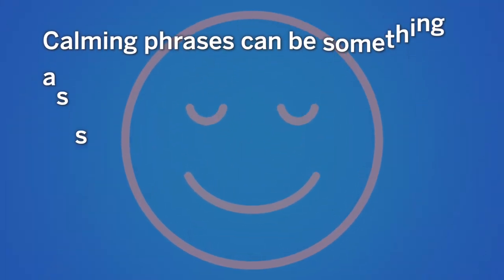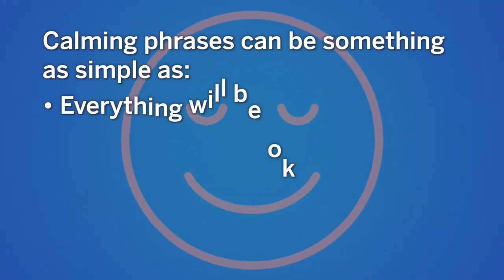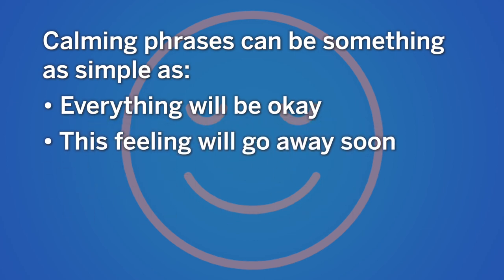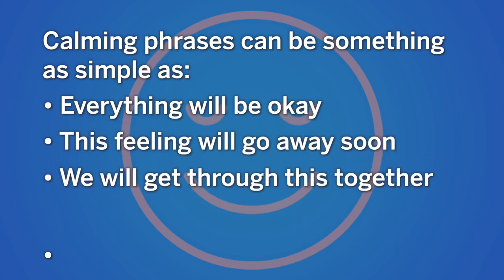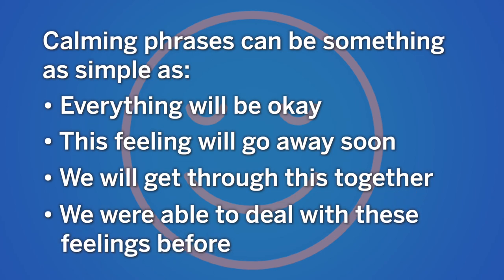Calming phrases can be something as simple as, everything will be okay, this feeling will go away soon, we will get through this together, or we were able to deal with these feelings before, we can do it again. Essentially, any words or phrases that your child or teen finds comforting in the moment.